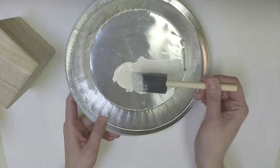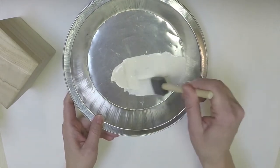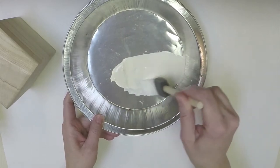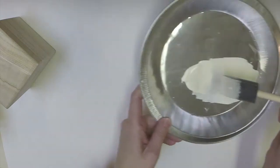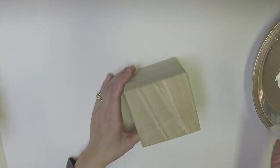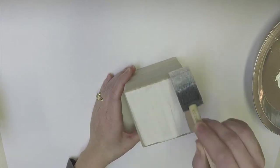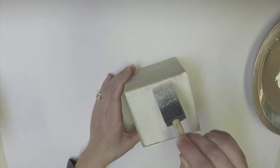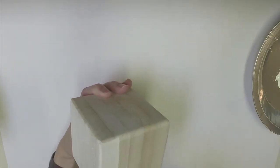When you have it the consistency that you want it to be you can just start painting it onto your block. Now keep in mind that the more water you add is obviously going to be a thinner paint and a lighter color once it's painted onto your block. It also is going to take a little longer to dry if you get it too wet so just keep that in mind. You can make it however thick or thin you want it to be.